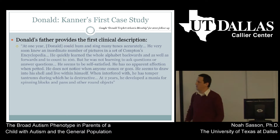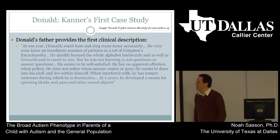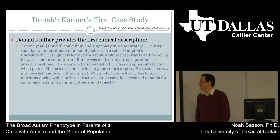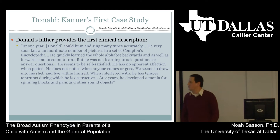This is a quote about Donald provided by his father: 'At one year, Donald could hum and sing many tunes accurately. He very soon knew an inordinate number of pictures in a set of Compton's Encyclopedia. He quickly learned the whole alphabet backwards as well as forwards and to count to 100. But he was not learning to ask questions or answer questions. He seemed to be self-satisfied. He has no apparent affection when petted. He does not notice when anyone comes or goes. He seems to draw into his shell and live within himself. When interfered with, he has temper tantrums during which he is destructive. At two years, he developed a mania for spinning blocks and pans and other round objects.' This would sound very familiar to any of you who have worked with children with autism.